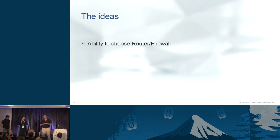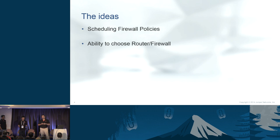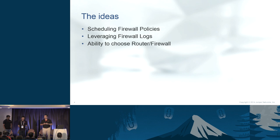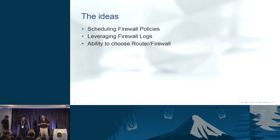We have a few ideas that we think will help the overall Firewall as a Service functionality. Today we're going to talk about: first, how to schedule a firewall policy — it is common in real firewalls to apply a rule at a particular time of day. Second, leveraging firewall logs — how to take intelligence from syslogs generated by firewalls. Third, the ability to choose a particular router or firewall, and how to make that more capable.